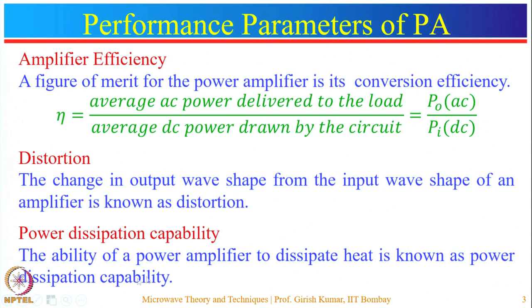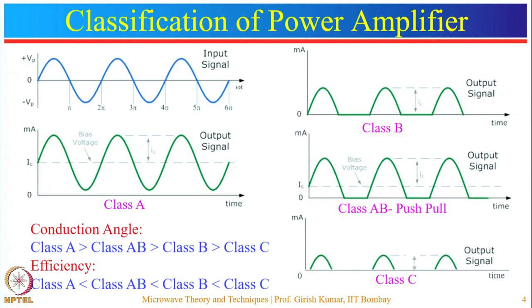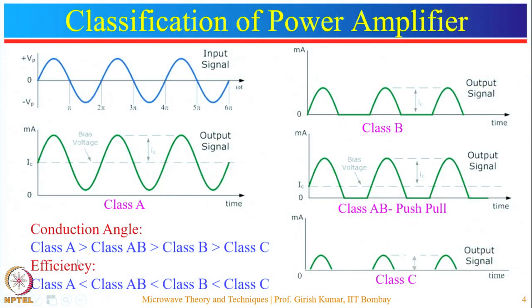In power amplifiers, the collector resistance is chosen relatively low because the output current or voltage swing should be very large, which requires a small collector resistance. Power amplifiers are broadly classified into three categories depending upon for how much portion the output current flows with respect to the input signal. The classes are class A, class B, and class C.